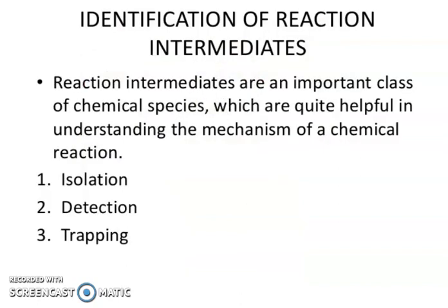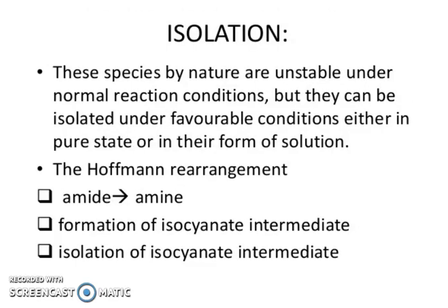Identification of the reaction intermediate. Reaction intermediates are an important class of chemical species which are quite helpful in understanding the mechanism of a chemical reaction. The approaches include isolation, detection, and trapping. With isolation, these species by nature are unstable under normal conditions, but they can be isolated under favorable conditions, either in pure state or in the form of solution. For example, the Hoffmann rearrangement involves the conversion of an amide to an amine via formation and isolation of an isocyanate intermediate.